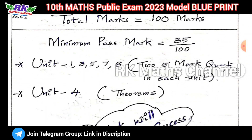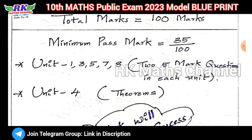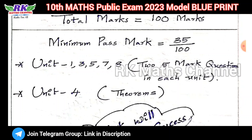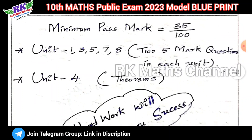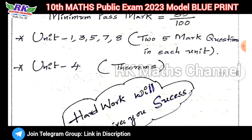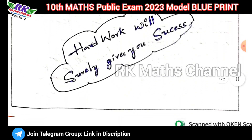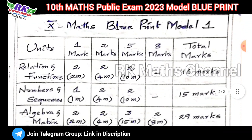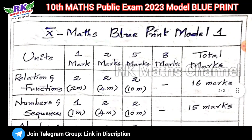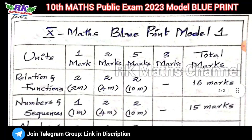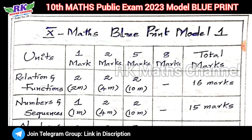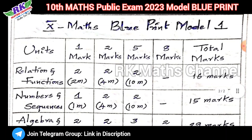Minimum pass mark is 35 marks. Units 1, 3, 5, 7, and 8 are covered. Minimum pass mark is 15 marks. Set the blueprint — each unit has 2 marks. The blueprint is at its best point. Part 4 has 3 marks only in 1 mark.